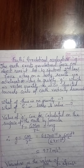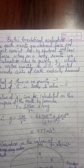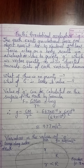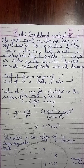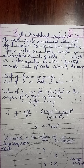Next is Earth's gravitational acceleration, i.e. g. The Earth exerts gravitational force on objects near it. According to Newton's second law, force acting on a body results in acceleration due to gravity g, which is a vector quantity as it is directed towards the center of the Earth, vertically downward. If there is no gravity, our weight will be weightlessness — we would be floating on the surface.